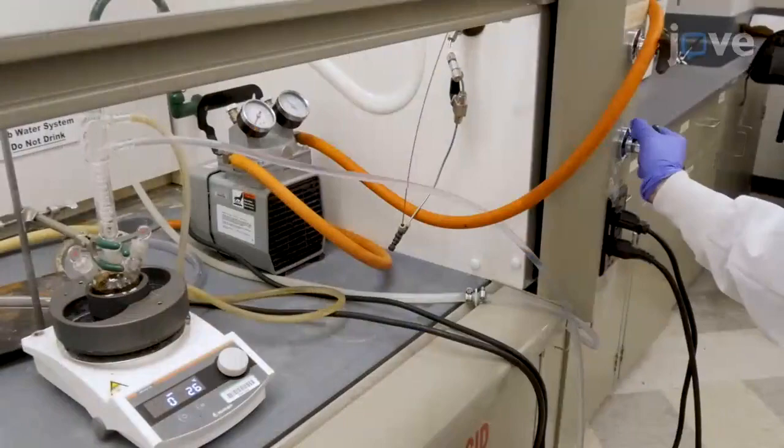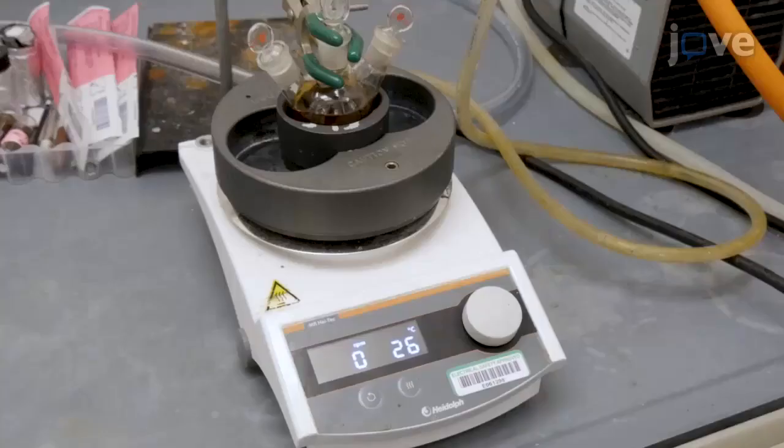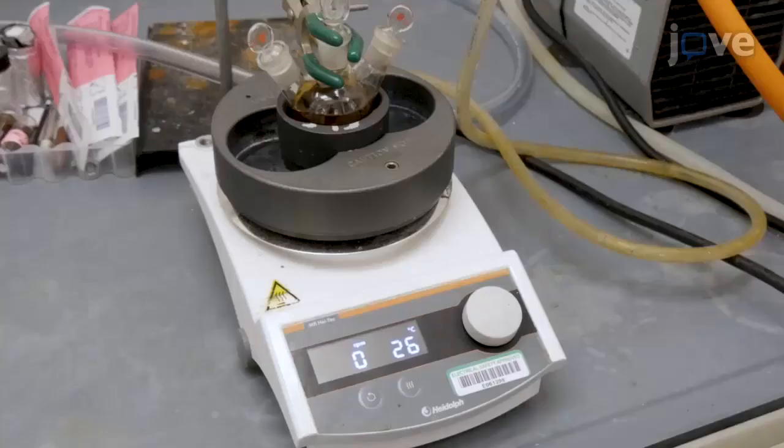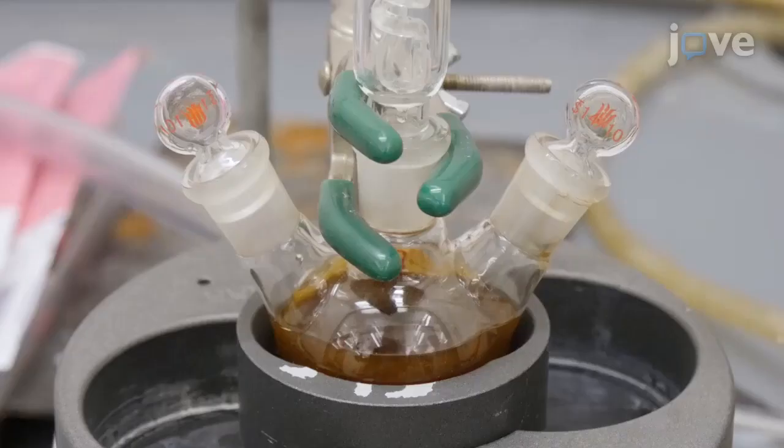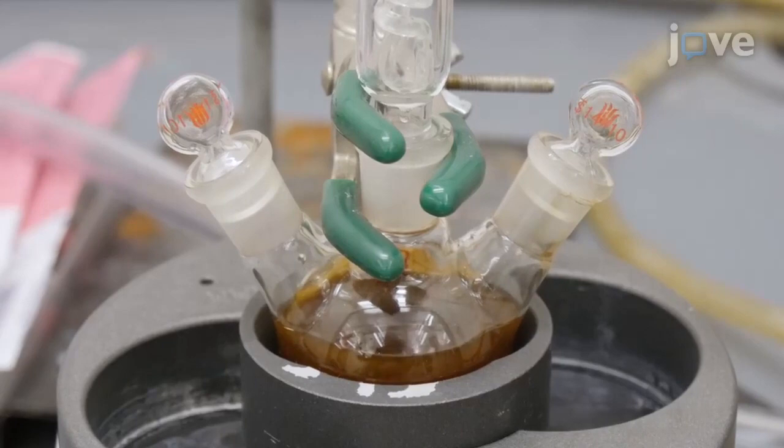Slowly open the condenser water valve and allow the water to flow through the condenser. Stir the solution at 300 rpm at room temperature until no more palladium acetate dissolves, which usually takes 10 to 15 minutes.